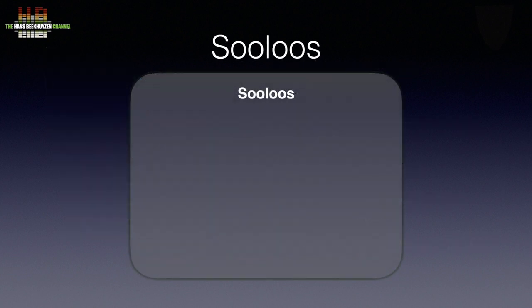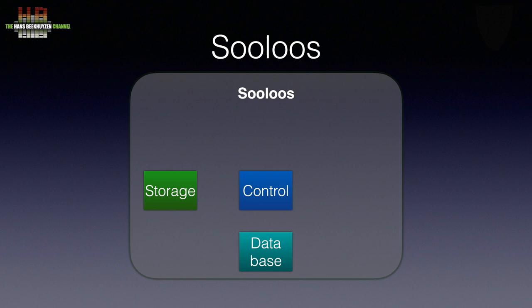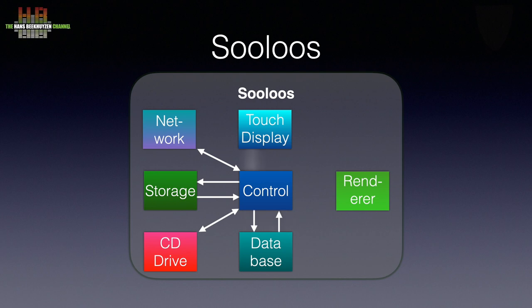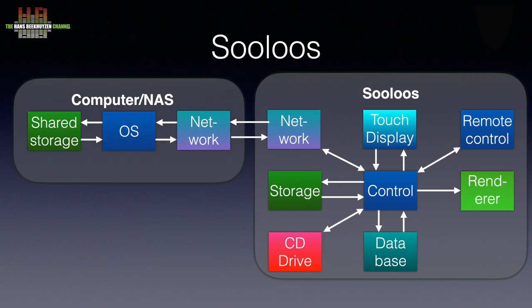When we look at the function diagram we see the usual functions — control, storage and database — but this time there is a touch screen as user interface and a CD drive for ripping. After startup, control checks the storage for content; further content can be added using the CD drive. The system collects metadata from internet services and the result is stored in a database. After receiving instructions from the touch screen, control checks the database, gets the associated file from storage and sends it to the renderer. Music stored on a shared volume on a computer or NAS can be indexed and played as well. It can even have the metadata updated without changing anything to the audio files, since all metadata is stored in the database, not in the audio files.